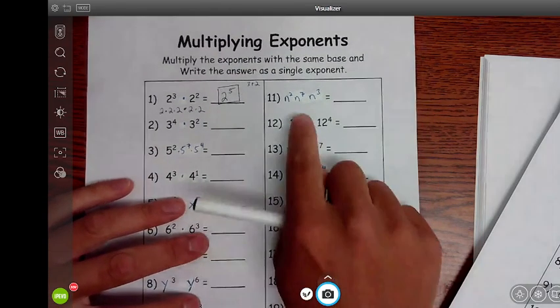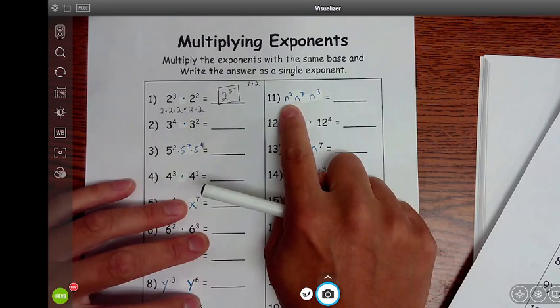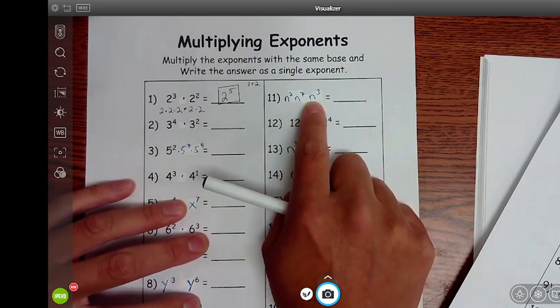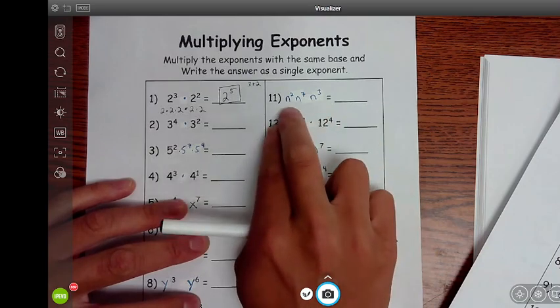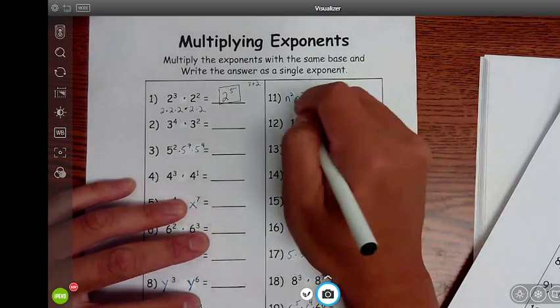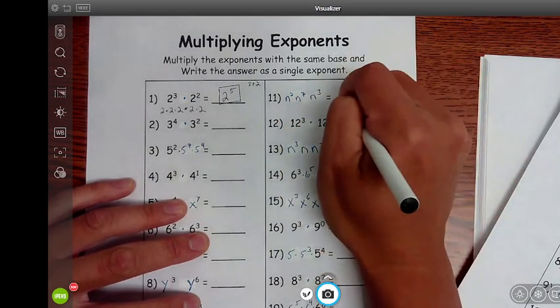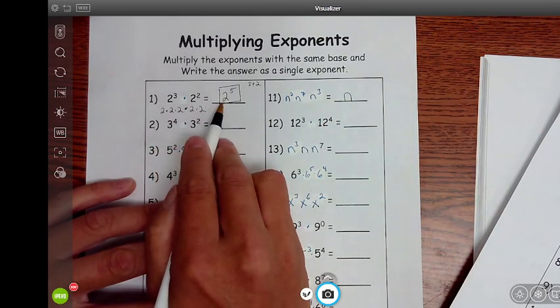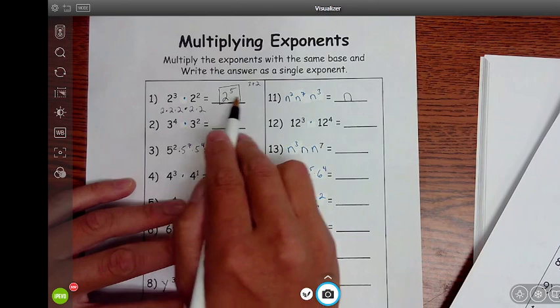Number 11. N to the 2nd power times N to the 7th power times N to the 3rd power. This time the base is a variable, but it's all the same. It's all the same base. So same base. We're going to keep that base just like we did here with the 2. We kept that base of 2, and now we're going to add the exponents.